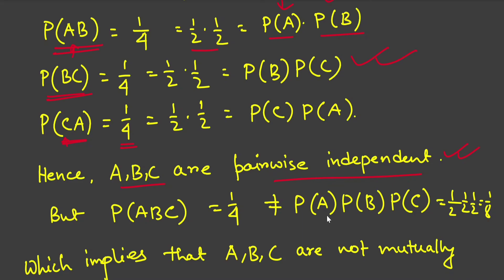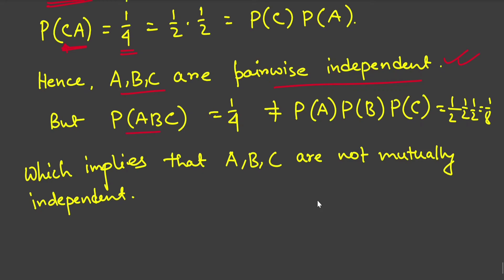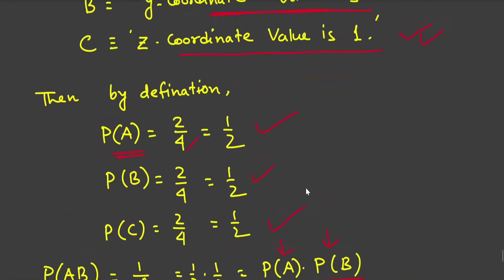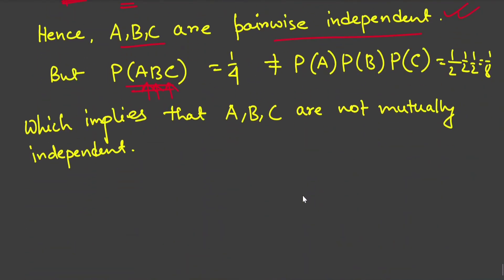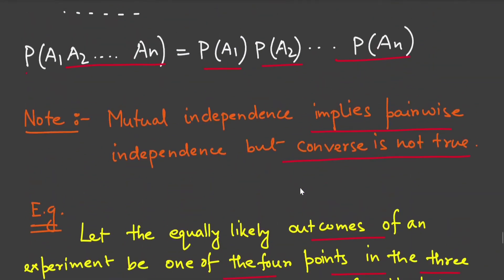To check mutual independence, we need the extra condition P(ABC) = P(A)·P(B)·P(C). Event ABC means x = 1, y = 1, and z = 1 simultaneously, which occurs only at (1,1,1), giving P(ABC) = 1/4. However, P(A)·P(B)·P(C) = (1/2)·(1/2)·(1/2) = 1/8. Since 1/4 ≠ 1/8, A, B, and C are NOT mutually independent. This proves that pairwise independence does not imply mutual independence.